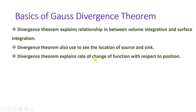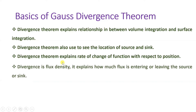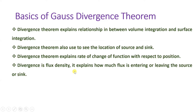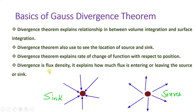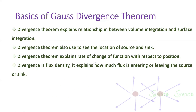That I'll explain in physical significance. Divergence is a flux density — it explains how much flux is entering or leaving. Based on that, we can identify whether a position is a source or sink. If flux is entering, that is a sink; if flux is leaving from the point, that is a source. This is what we do with the divergence theorem.